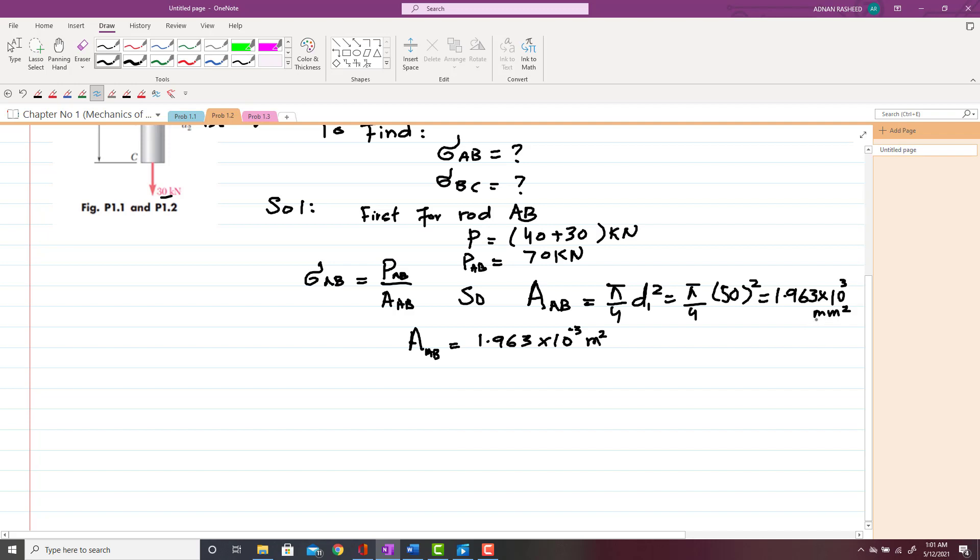So now we have to find sigma_AB at mid-section. That will be P_AB divided by area of AB. So P_AB is 70 kilonewtons, so 70 × 10³ newtons divided by area 1.963 × 10³ mm². That will give you 35.7 × 10⁶ newtons per meter square, which is equal to sigma_AB, which will be 35.7 MPa.